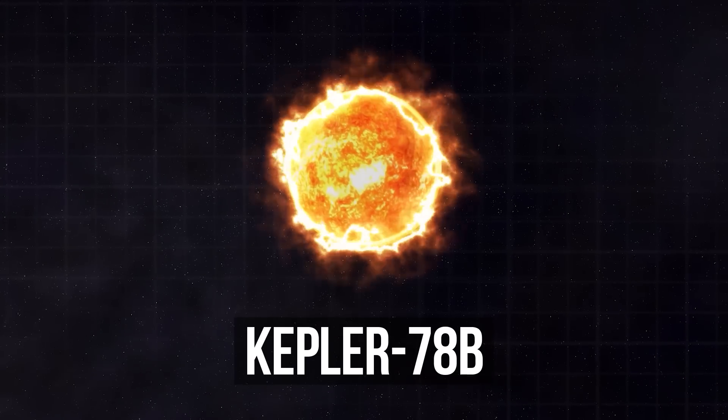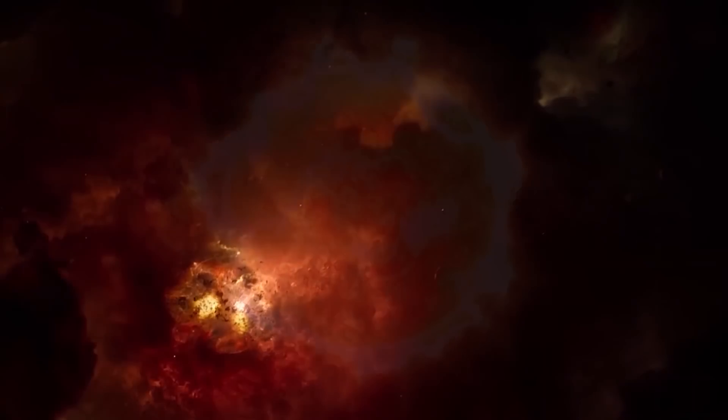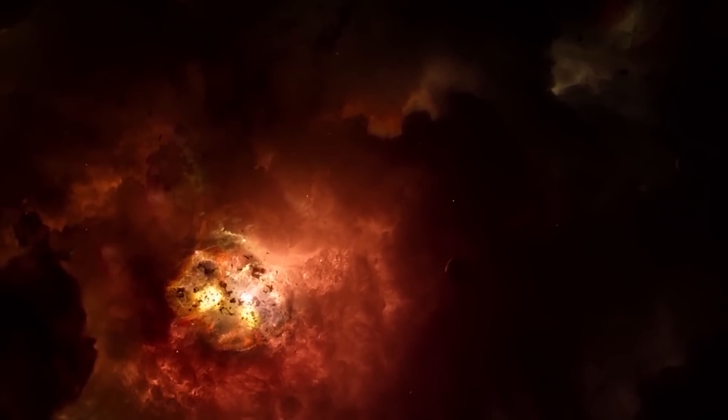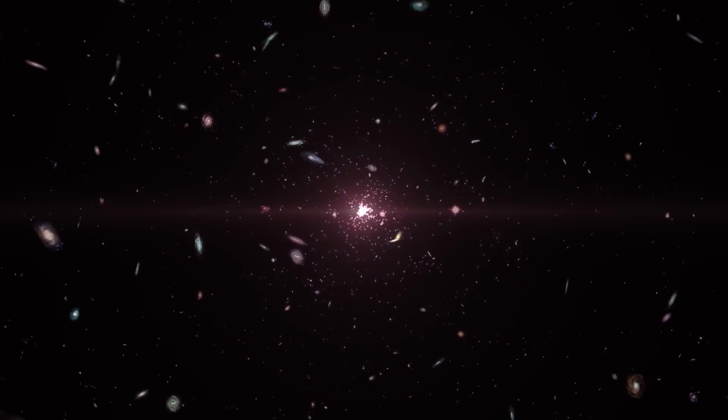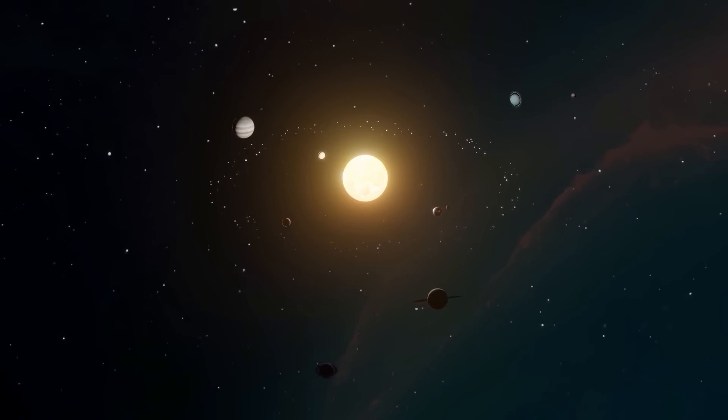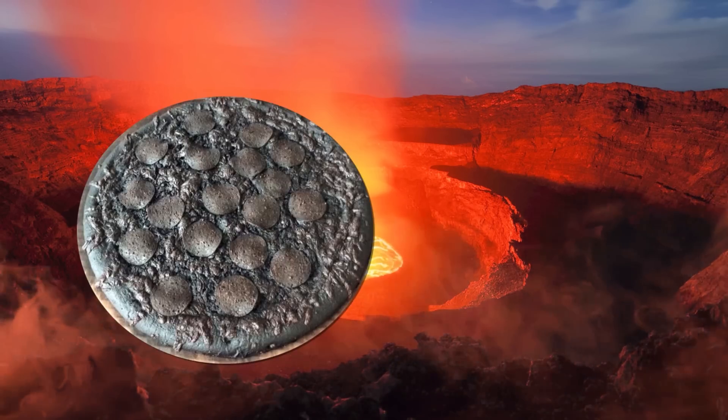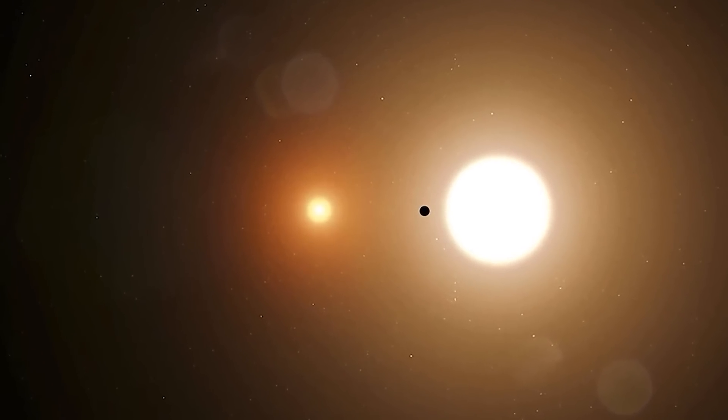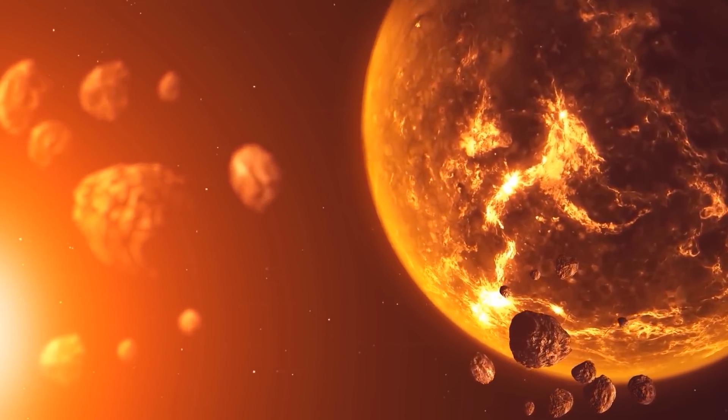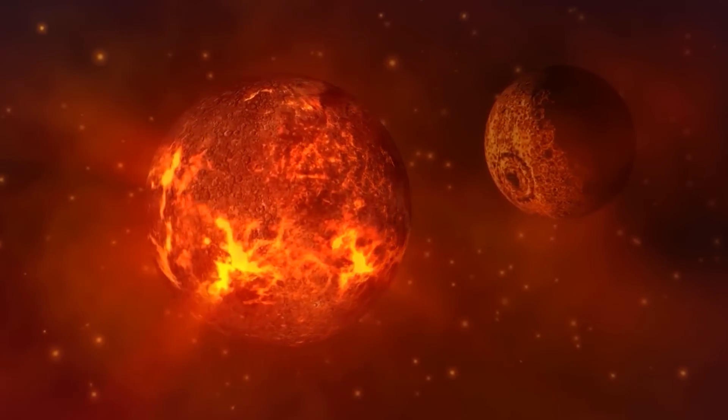the surface of Kepler-78b is heated to 2,500 degrees Celsius. And according to all our current knowledge of space, such an extreme world is not supposed to exist at all since planets never appear that close to their stars. It's like finding a pizza in a crater of a volcano. To date, there's not a single scientific model that can explain what kind of forces could place Kepler-78b in that monstrous forge.